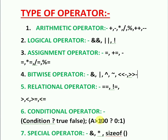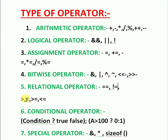Relational operators: equal-to (==) is used to check if both operands are equal. Not-equal-to (!=) is used to check if both operands are not equal. Greater-than (>) checks if the first operand is greater than the second operand.